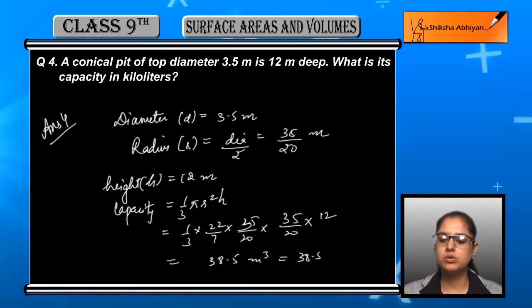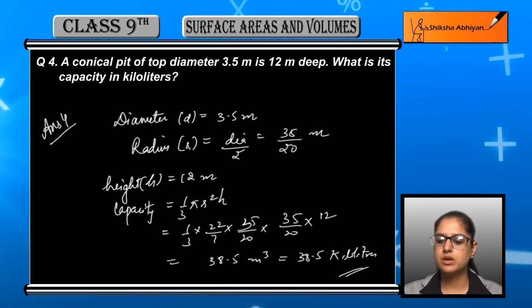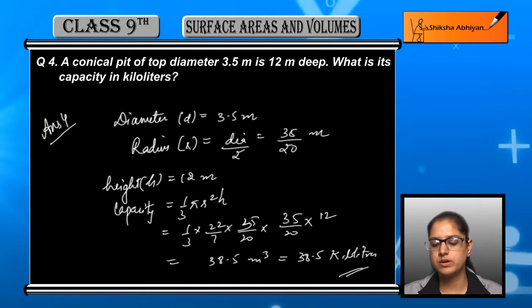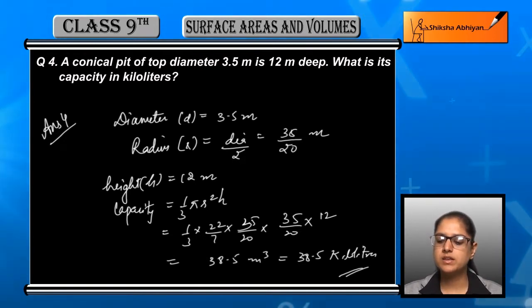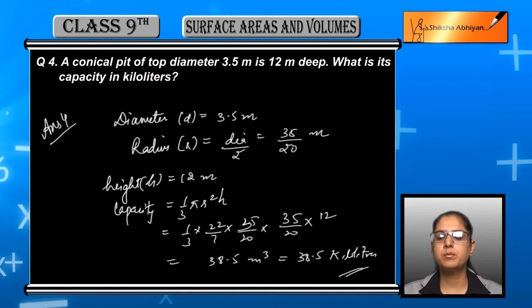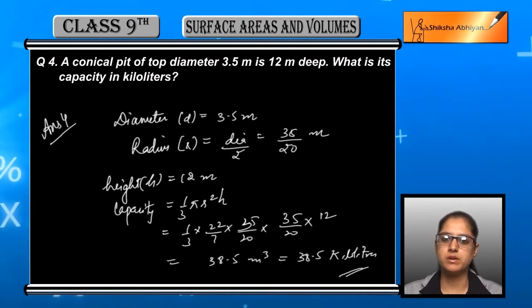That means 1 upon 3 into 22 by 7 into r is 35 upon 20, which has to be written twice, multiply by the height that is 12. We will get 38.5 meter cube as the volume and 38.5 kiloliters as the capacity of the pit.